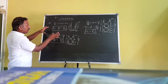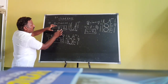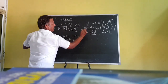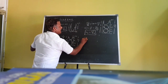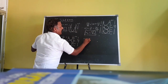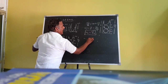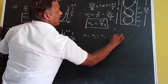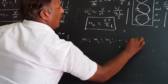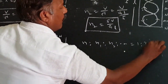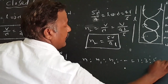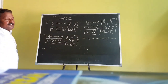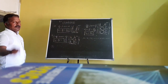The frequency ratio is N : N1 : N2 : ... = 1 : 3 : 5 : ... This is only an odd number ratio. In closed pipes, only odd harmonics are produced.